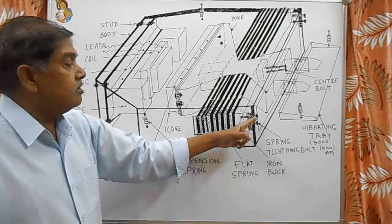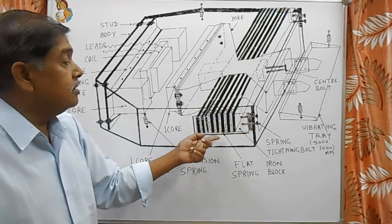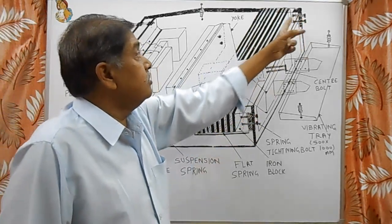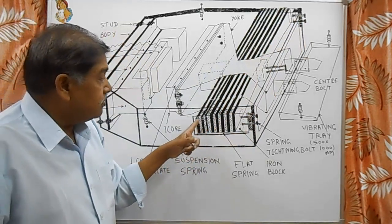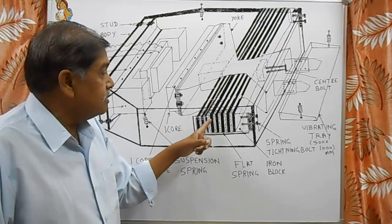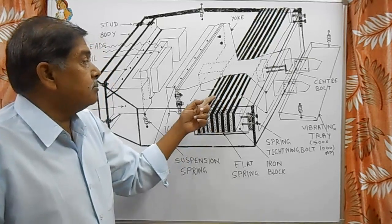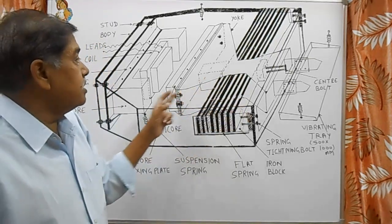These side bolts are there to tie the spin plates. Two side bolts are here and two side bolts are here to tie the spin plates. In between the spin plates there are fiber spaces. These are provided to reduce the friction between the spin plates.